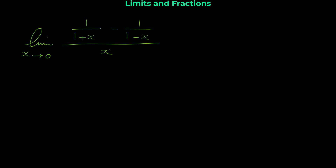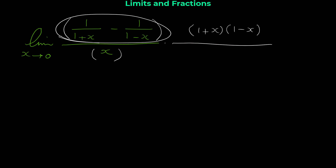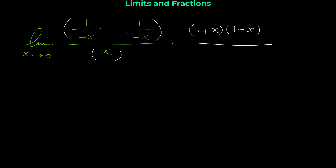You might think it's a good idea to do a common denominator in the numerator — yes, you can find this limit that way — but the easier way is to get rid of the fractions by multiplying the top and the bottom by the common denominator between 1 + x and 1 − x. We are going to multiply the top and the bottom by (1 + x)(1 − x).